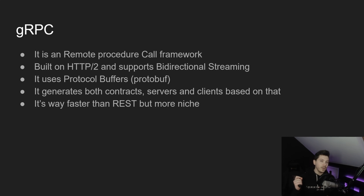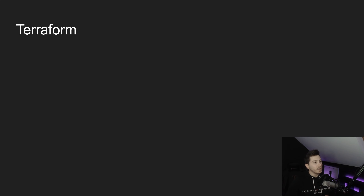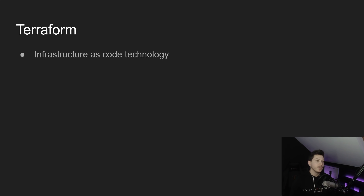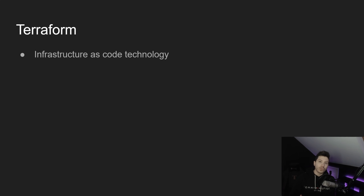The fourth thing on my list might look a bit weird, but it's going to be Terraform. Terraform is an infrastructure as code technology and a DevOps technology. Infrastructure as code is the idea that you can define your infrastructure, your solution, your architecture — the system that needs to be in place to run your code — as code. Terraform is a standardized technology across multiple providers which allows you to do that.